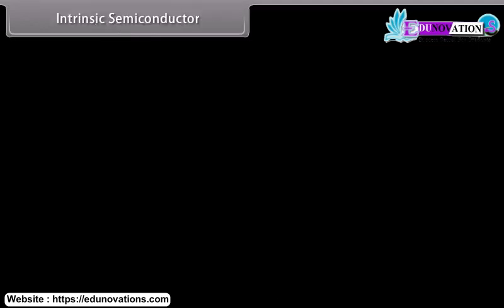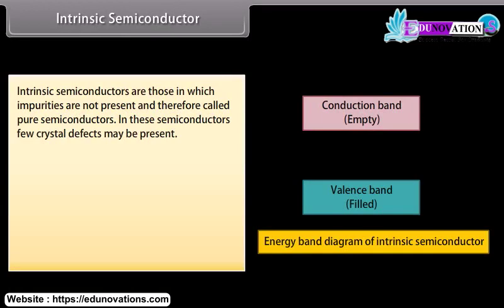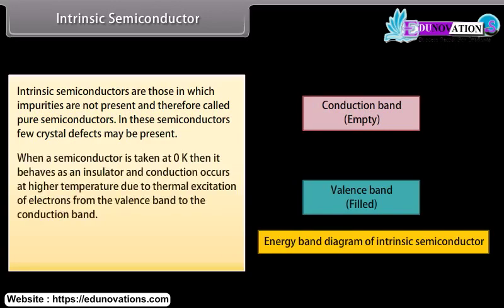Intrinsic semiconductors are those in which impurities are not present and are therefore called pure semiconductors. In these semiconductors, a few crystal defects may be present. When a semiconductor is taken at zero Kelvin, it behaves as an insulator, and conduction occurs at higher temperature due to thermal excitation of electrons from the valence band to the conduction band. Examples include germanium and silicon. Silicon has four valence electrons and must make four covalent bonds to gain stability.